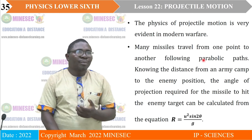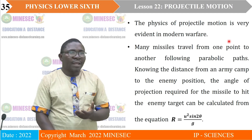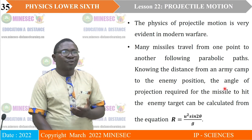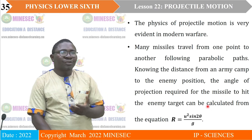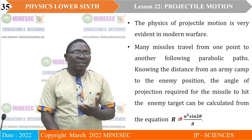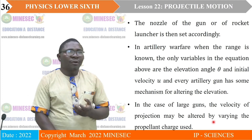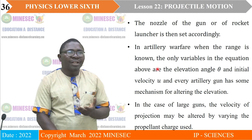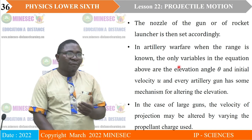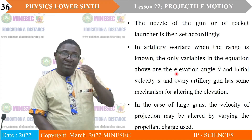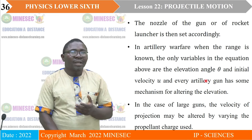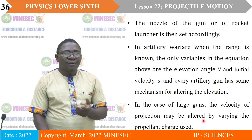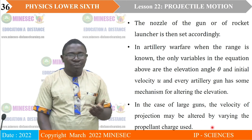Applications of projectile motion: the physics is very evident in modern warfare. Many missiles travel from one point to another following a parabolic path. Knowing the distance to the enemy position, the angle of projection required to hit the target can be calculated using the range equation, and the gun or rocket launcher nozzle is set accordingly. In artillery, the only variables in the range equation are the angle and the initial velocity, which can be varied by altering the propellant charge.